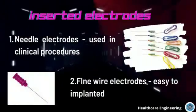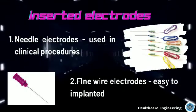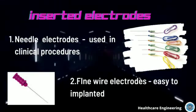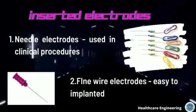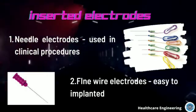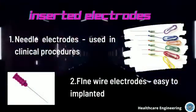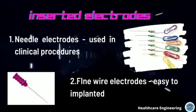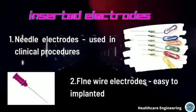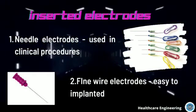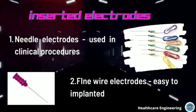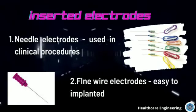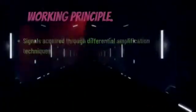Inserted electrodes have two further types: needle electrodes and fine wire electrodes. Needle electrodes are widely used in clinical procedures and neuromuscular evaluations. The tip of the needle electrode is bare and used as a detection surface, and it contains an insulated wire in the cannula. Fine wire electrodes are made from small diameter, highly non-oxidizing stiff wire with insulation. They are easily implanted and withdrawn from skeletal muscle, and are generally less painful than needle electrodes, whose cannula remains inserted in the muscle throughout the entire test.